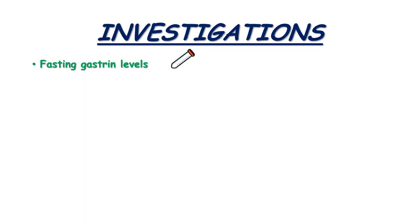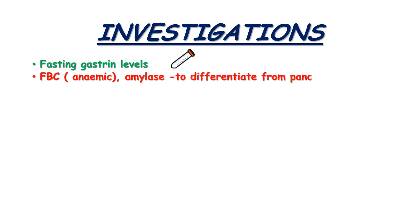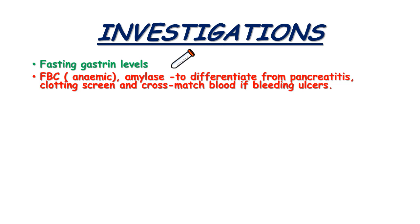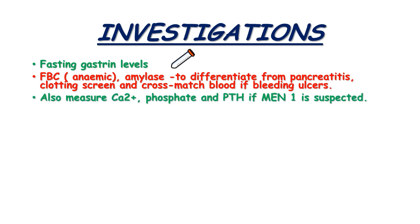Investigations include fasting gastrin levels, full blood count, and serum amylase to differentiate from pancreatitis. A clotting screen and cross-matching of blood should be done if bleeding ulcers are present. Calcium, phosphate, and parathyroid hormone levels should be measured if multiple endocrine neoplasia type 1 is suspected.